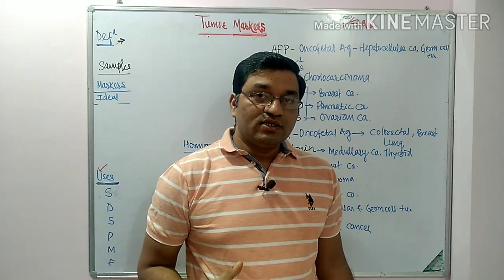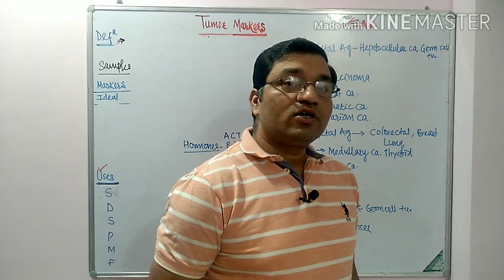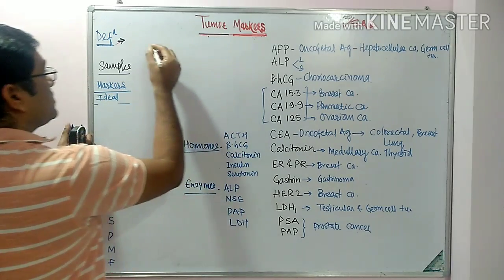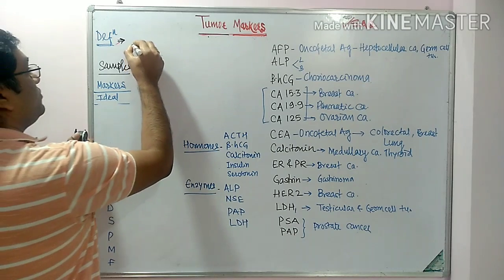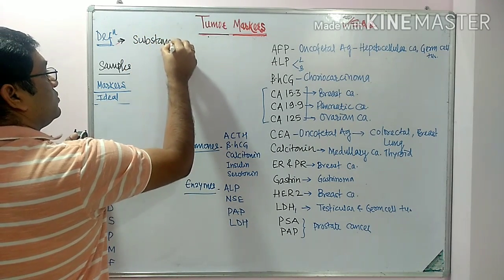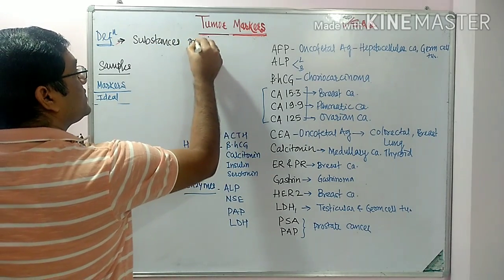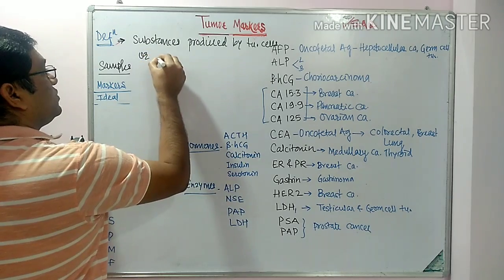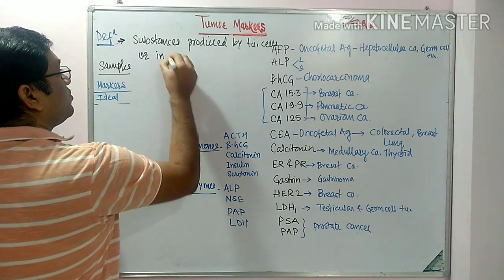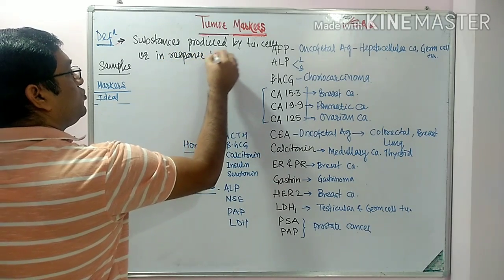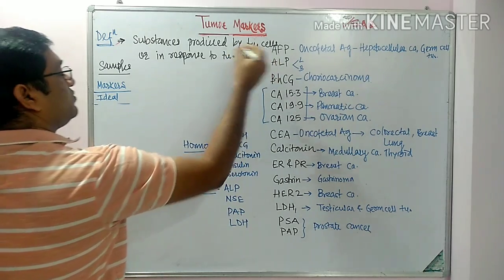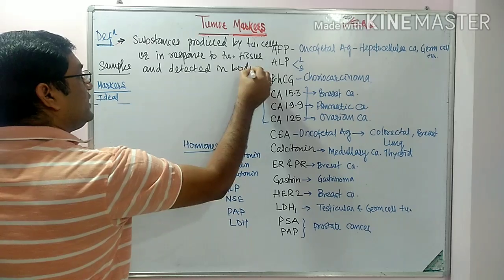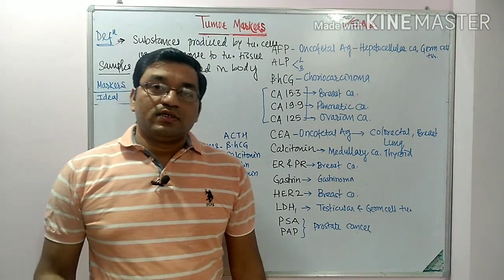What is the meaning of tumor? Tumor means cancer or neoplasm. Cancer means it is an abnormal, uncontrolled growth of the cell. What is the meaning of tumor marker? These are substances, mainly proteins, produced by tumor cells or produced by normal cells in response to tumor cells or tumor tissues, and detected in body fluids. They are known as tumor markers.